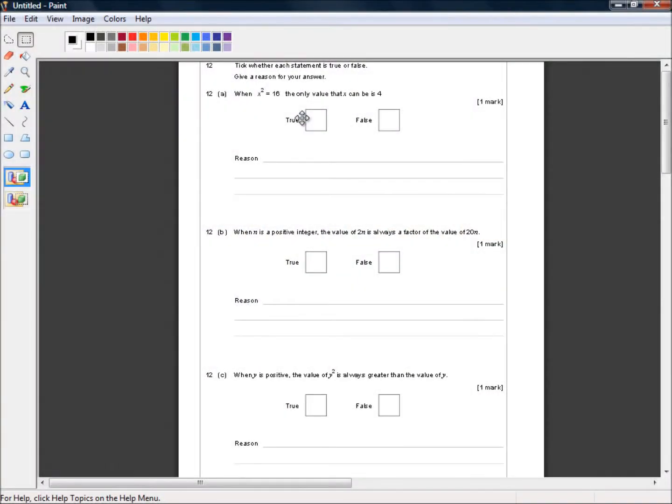Hello and welcome to the AQA GCSE 8300/3H paper 3 higher tier calculator paper. We're picking up at question 12. Tick whether each statement is true or false. Give a reason for your answer.